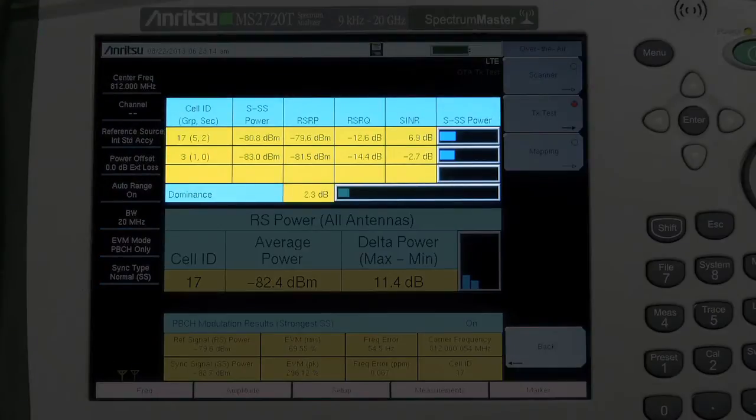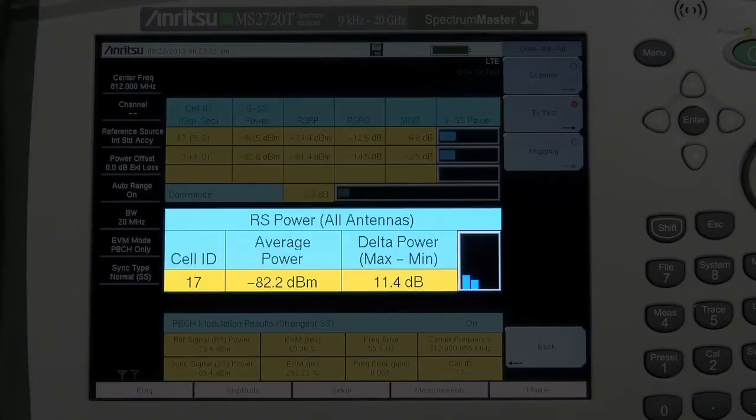As an example, this screen is showing the reception of two cell IDs of roughly equal amplitude, and it's impossible to find a sweet spot location. The reference signal power delta, which should be within 3 dB for correct operation, is indicating it can only find a reference signal from one transmitter of cell ID 17.